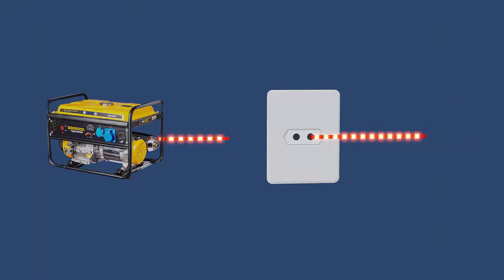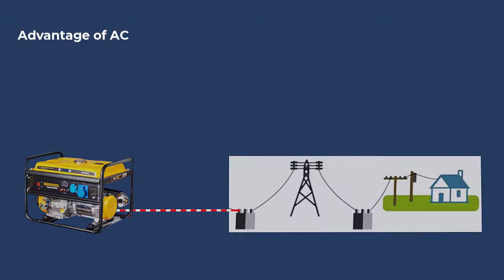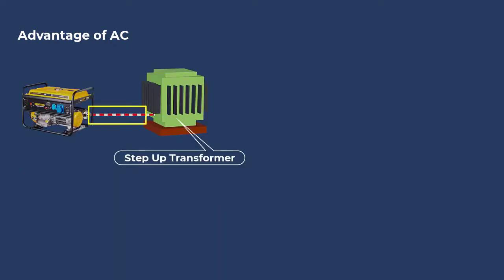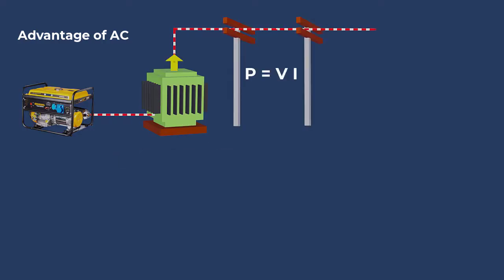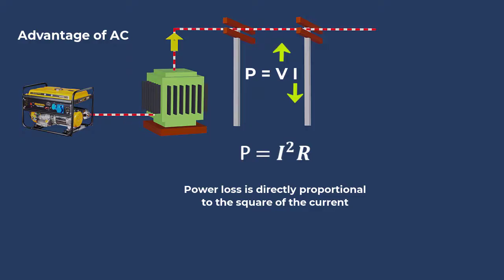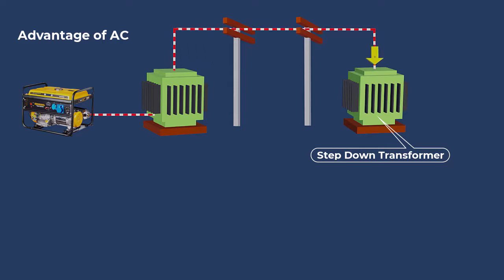The fluctuating nature of AC has both advantages and disadvantages. One major advantage of AC is its efficiency for long-distance transmission. The fluctuating nature of AC allows voltages to be easily stepped up to much higher levels using transformers. By increasing the voltage, we can significantly reduce the current flowing through the wires. This dramatically minimizes power loss over long distances. Once the electricity reaches its destination, transformers step down the voltage to safe and usable levels for homes and businesses.